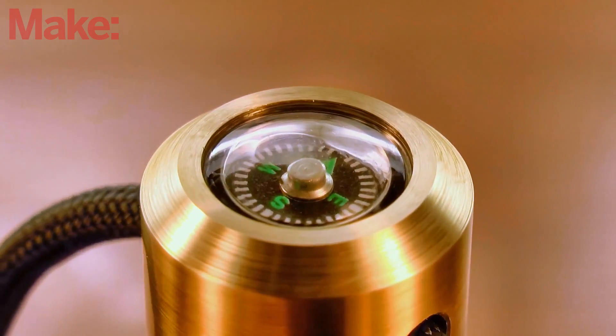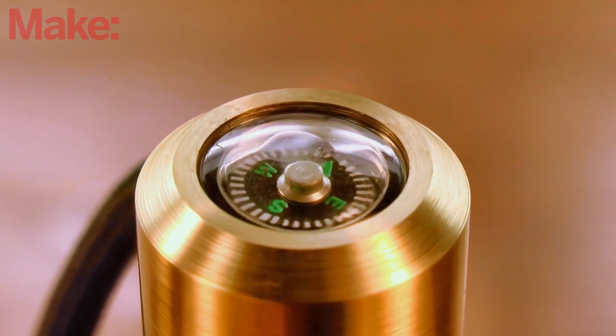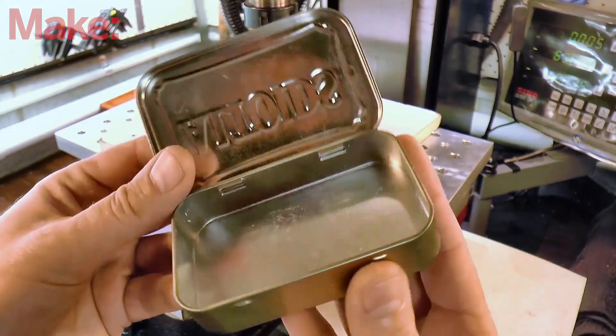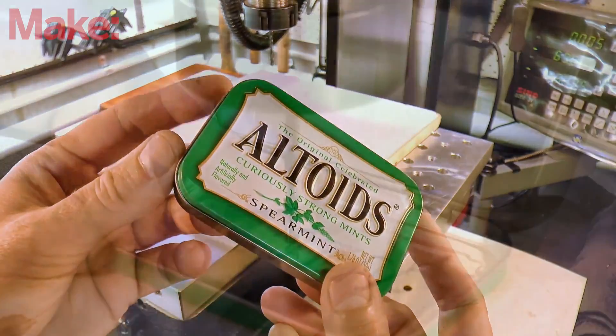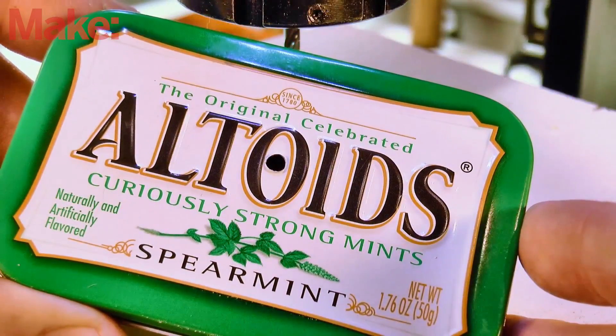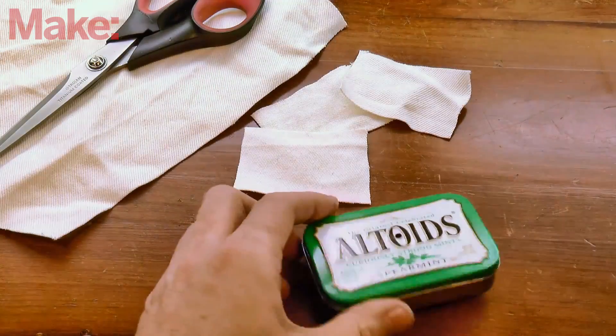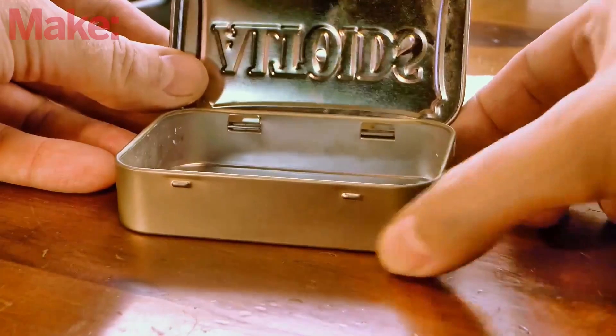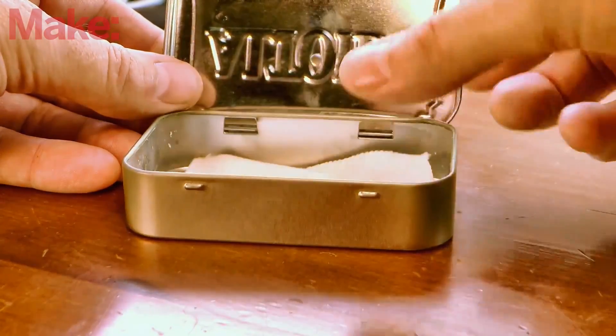Okay let's give this thing a test, but before we can do that, we need some tinder. And one of the easiest to make is char cloth. Find a small tin like this one, and then drill an 1/8 inch hole in the top. Place a piece of 100% cotton inside the tin, it's important that it be cotton, synthetic fabrics don't work.